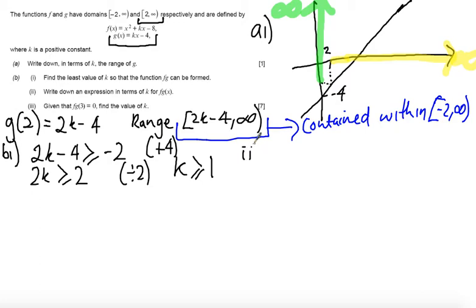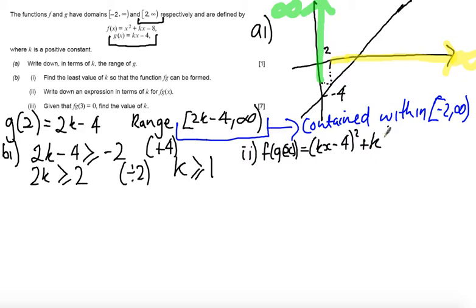Part 2: Write an expression for fg(x). I'm going to substitute g(x) into our quadratic. So I'm going to replace x squared with (kx minus 4) squared, and replace kx with k times (kx minus 4), minus 8. And that's all I need to do.